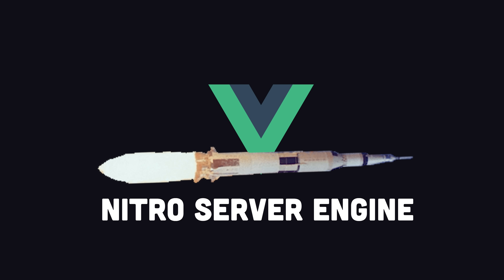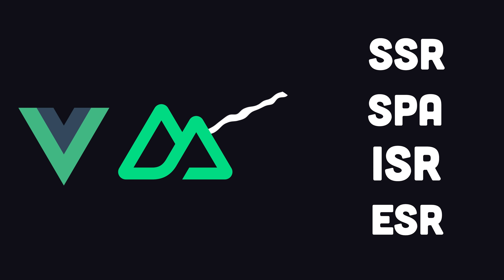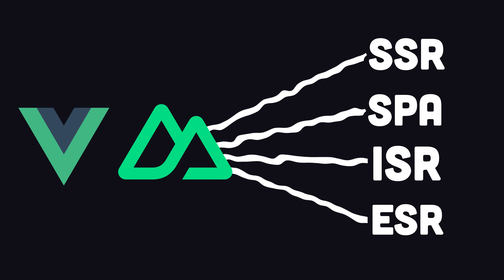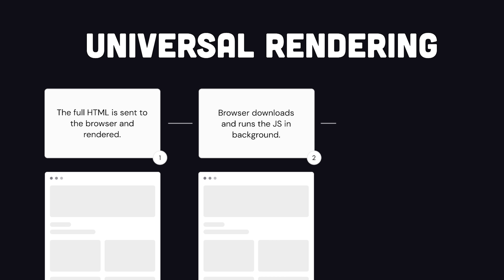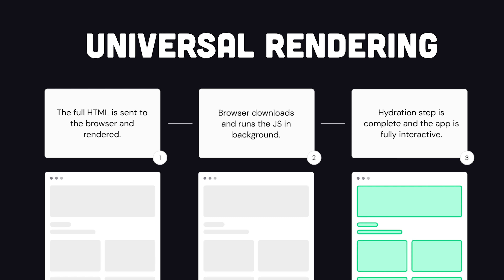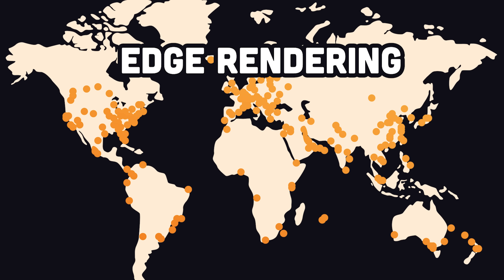It works by strapping its Nitro Server Engine to Vue, enabling multiple rendering modes from a single application. By default, it does universal rendering, where the initial page view is rendered on the server, then JavaScript takes over to handle all subsequent navigation client-side. However, if that's not ideal, developers can set different rendering and caching rules for every route, and it's capable of running on edge networks like Cloudflare.